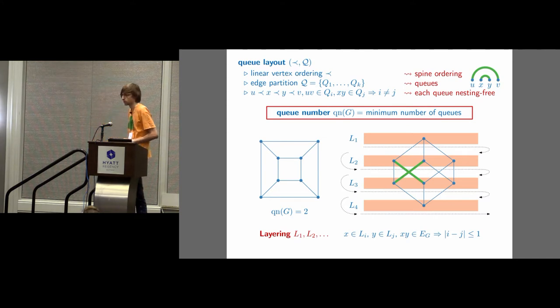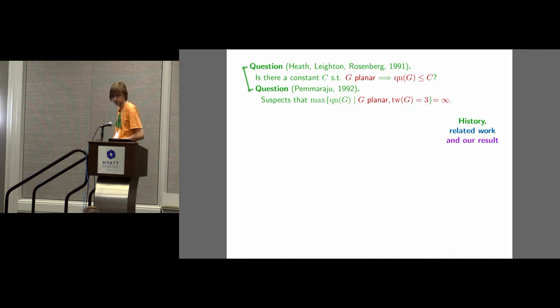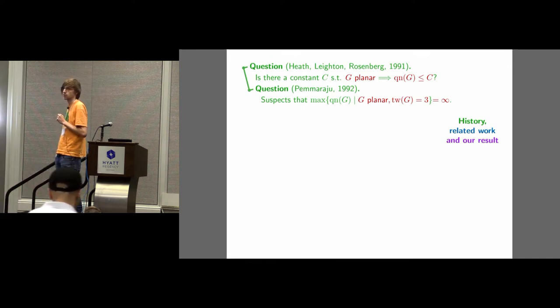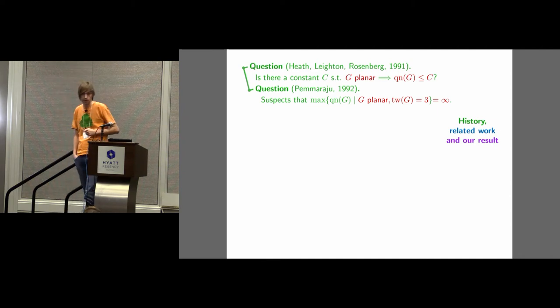So now we know exactly what the Q number is, and I assume that we know what the planar graph is, so let's go through the history. So in 1991, Heath, Leighton, and Rosenberg asked whether there is a constant, universal constant C, so that every planar graph has Q number at most C. And this has been open since then. Actually, a year later, Pamaraju, who was a student of Heath, in his thesis, suspects that the answer should be no, and he suspects that a particular class of graphs, of planar graphs, namely those of tree-width three, should already be a counterexample, so they should have growing Q number.